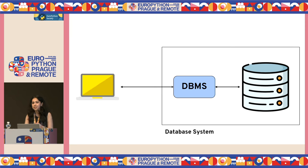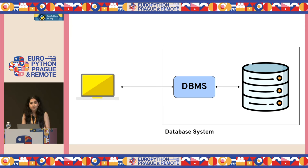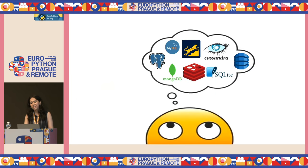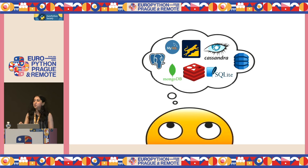Together, this system is called a database system. So all the popular databases that you might have heard of — like MySQL, Postgres, RocksDB, SQLite — all these are database management systems. Now, with so many options available in the market, how do you choose the right one for your application?